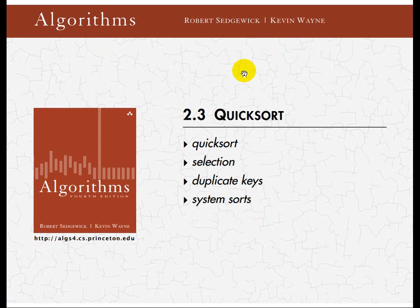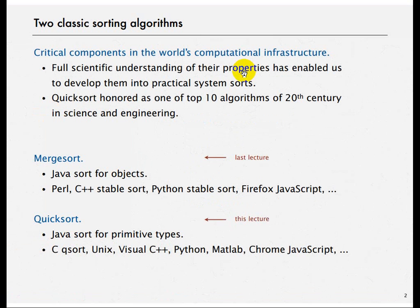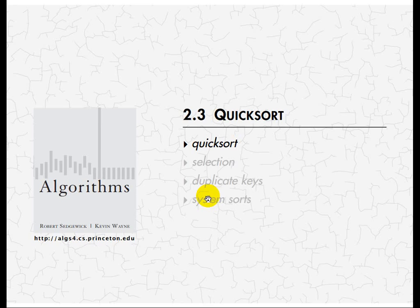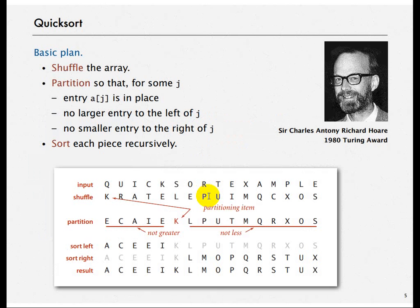We are now going to look at Quicksort. We looked at merge sort, which introduced recursive sorting as an N log N solution. Quicksort has been regarded as one of the top 10 best algorithms of the century — there is even a t-shirt that prints the code for it. It was invented by Richard Hoare, and it is an in-place sorting algorithm.